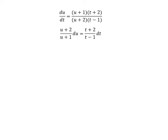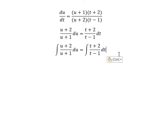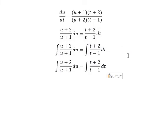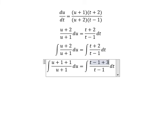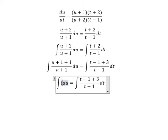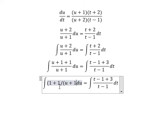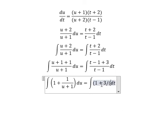Next, we put the integration for both sides. We put u plus 1 plus 1, that's u plus 2 in here. We can put negative 1 plus 3, that's t plus 2. This one divided by this one gives us 1 plus 1 over u plus 1. This one gives 1 plus 3 over t minus 1.